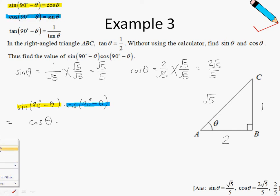So we are actually looking for cosine theta multiplied by sine theta. And the values of these two functions have already been found in the earlier part of this question. So cosine theta is 2 root 5 over 5.